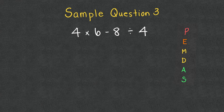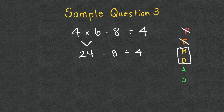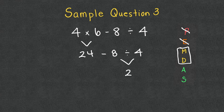Sample question three: 4 × 6 − 8 ÷ 4. No parentheses, no exponents, so we focus on multiplication and division left to right. 4 × 6 = 24, leaving 24 − 8 ÷ 4. We still have division remaining, so 8 ÷ 4 = 2. Then 24 − 2 = 22. The answer is 22.